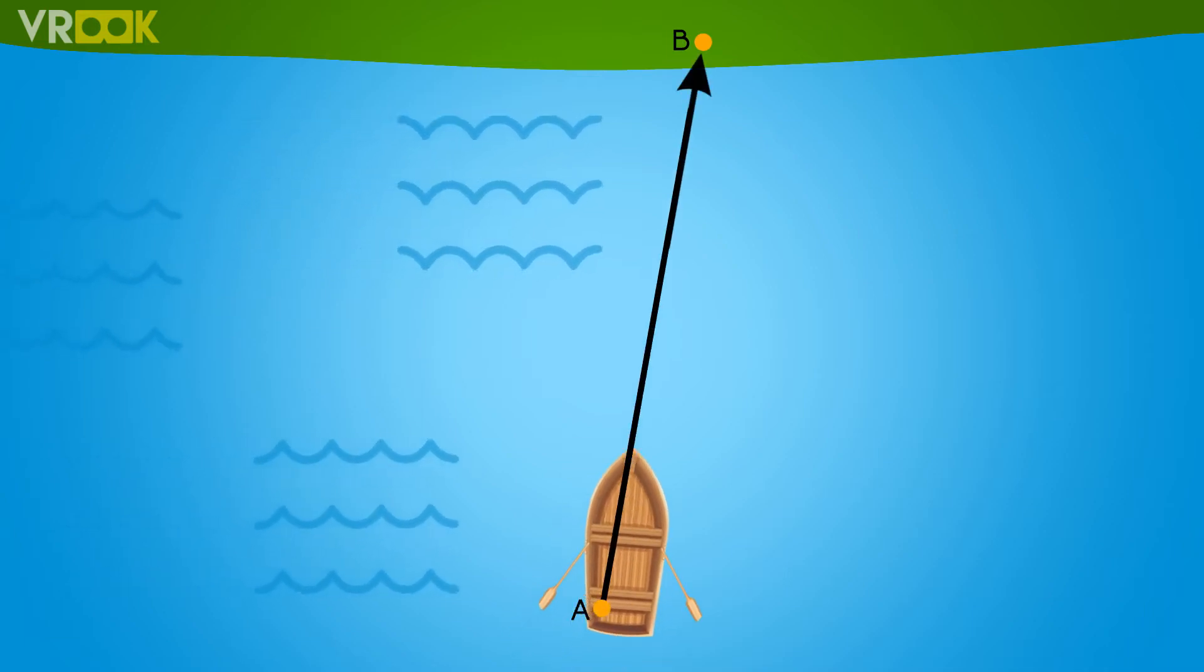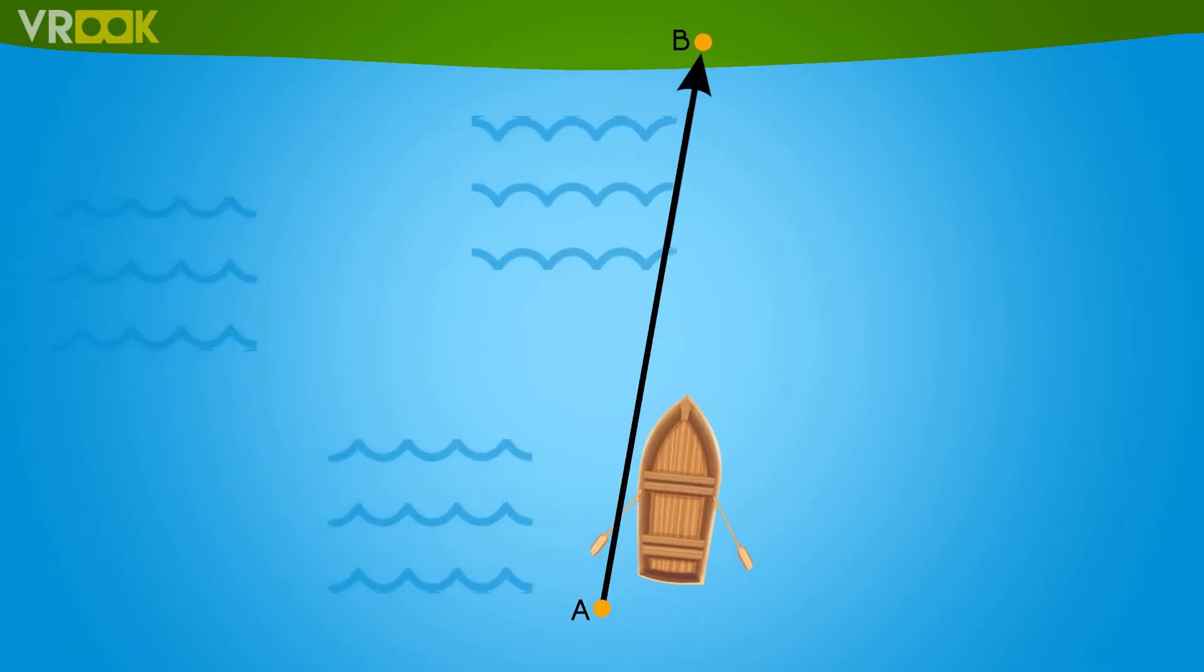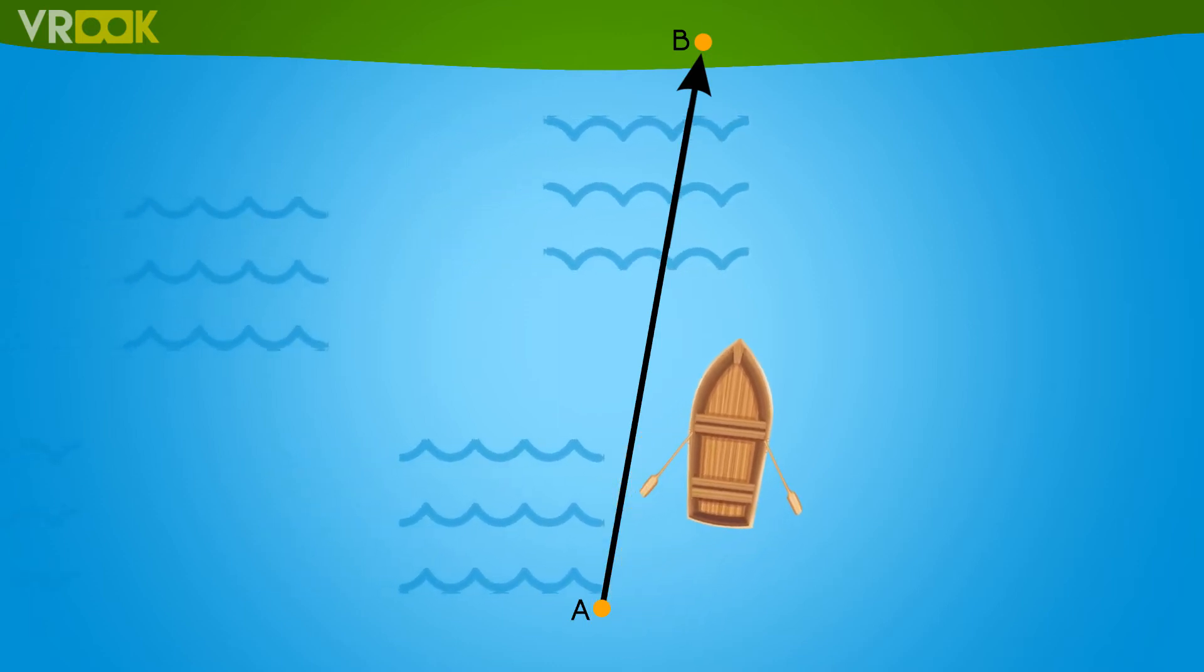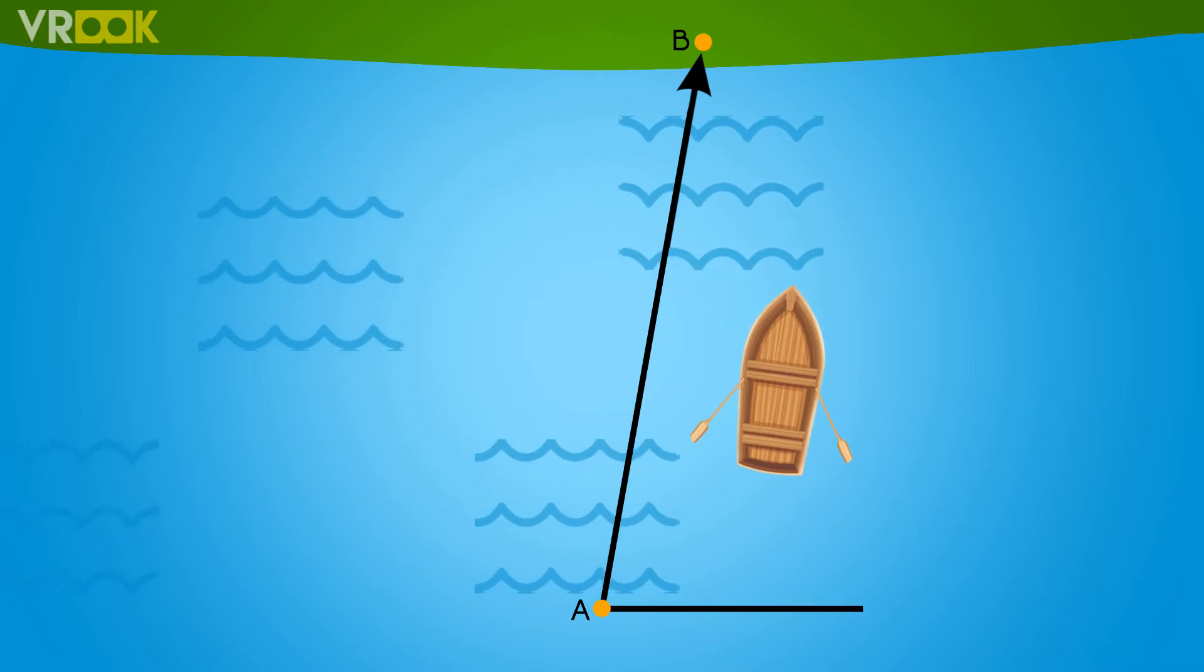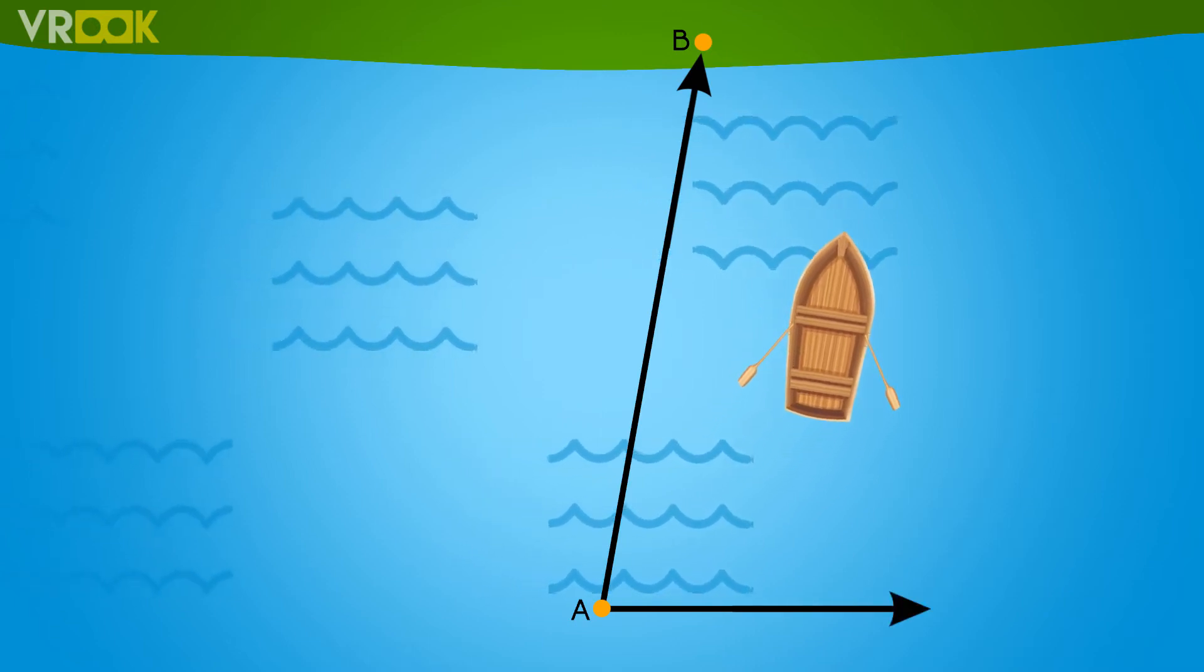When you get on the boat and start to row, you intend to reach point B on the other side. But as the river is flowing towards the right side, it will affect your motion.